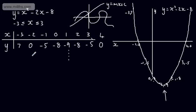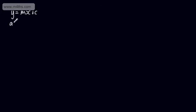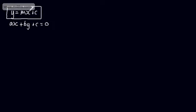What we're going to do in this video is work through some basic graphs and look at the different types. Some of them will be revision for you; some will be new learning. Let's start off with straight lines. Straight lines are generally put in the form y = mx + c, or ax + by + c = 0.